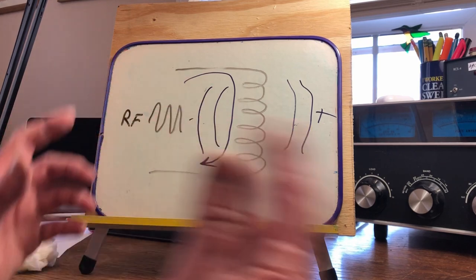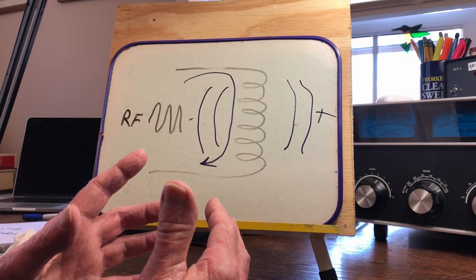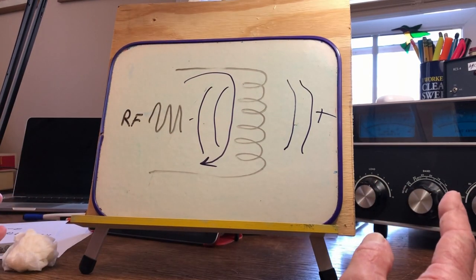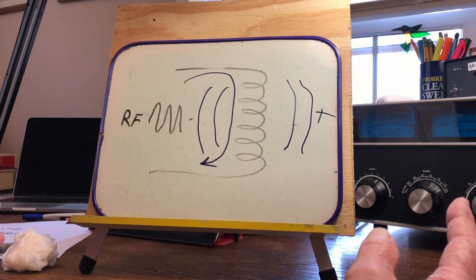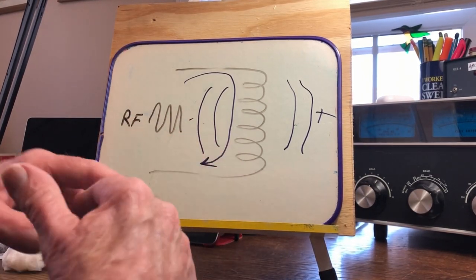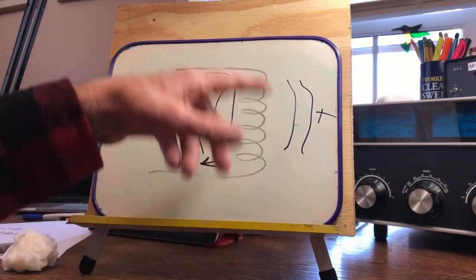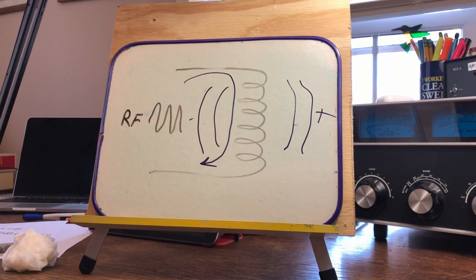Current goes into the coil and the first thing it does is build up a field, then it changes direction. The field is collapsing and has to build up in the other direction. At a slow frequency it can do all this. As you increase the frequency, the current barely gets the field started before it switches direction — that's the point at which you have no current flow through the coil at all. That's how inductive reactance works.